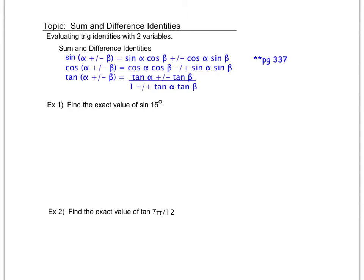What I can do is expand this and say if I'm adding two quantities then I can say that becomes the sine of alpha cosine of beta — since the plus comes first here, the plus comes first here — cosine of alpha sine of beta. If I had been subtracting those two variables I would use the same formula but with a subtraction sign in between.